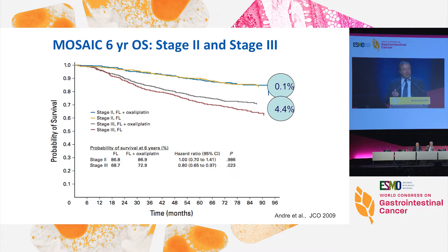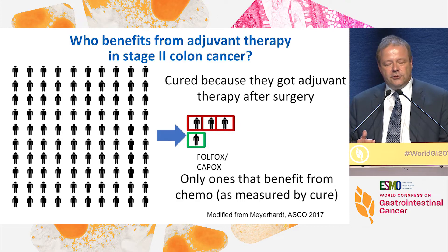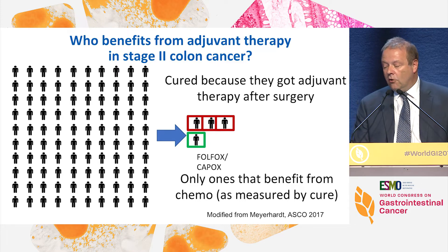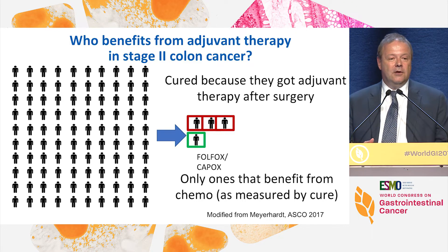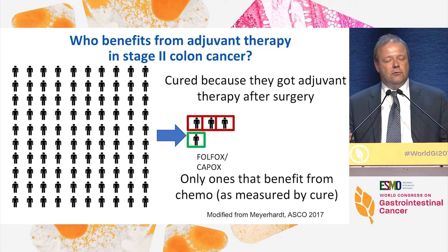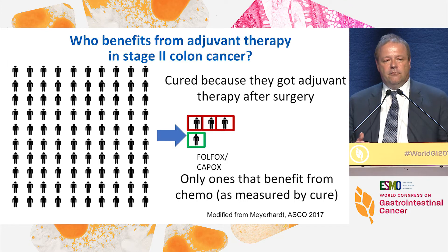The overall survival difference in stage two was 0.1 percent versus 4.4 percent in stage three. So the standard of care has been to use a fluoropyrimidine as a single agent for the majority of stage two patients. The question is whether a 7.2 percent disease-free survival difference is a value in itself. When you look per 100 patients at how many are actually cured by adjuvant therapy in stage two, it's roughly three patients with fluoropyrimidine and perhaps one additional with an oxaliplatin-based regimen.